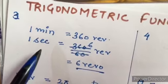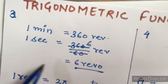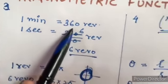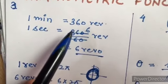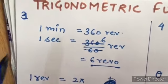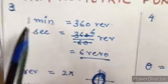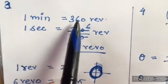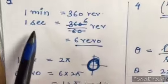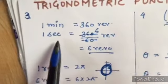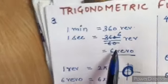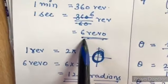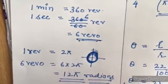Question number three: a wheel makes 360 revolutions in one minute. How many radians does it turn in one second? One minute is equal to 360 revolutions. We divide by 60 seconds, we get 6 revolutions per second.